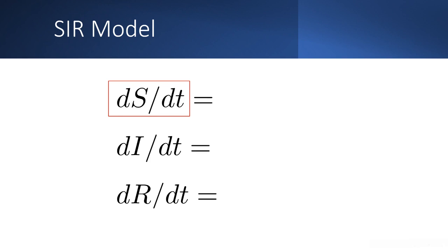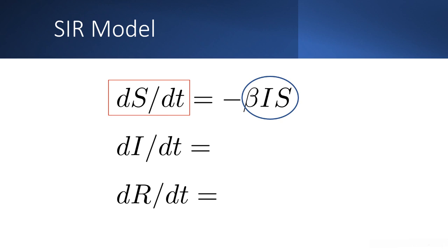That was a little introduction, and we can get into the differential equations that we would use in the model. The first is dS/dt, which we would use to model how the number of individuals who are susceptible to getting the disease change over time. This depends on the proportion of susceptibles who gets infected. Here, beta represents the rate at which disease transmission is occurring. S represents the initial proportion of the population that are susceptible, and I represents the initial proportion of the population that are infected.